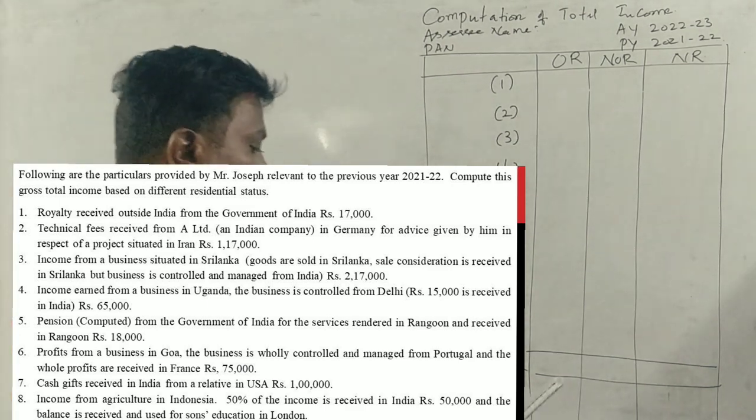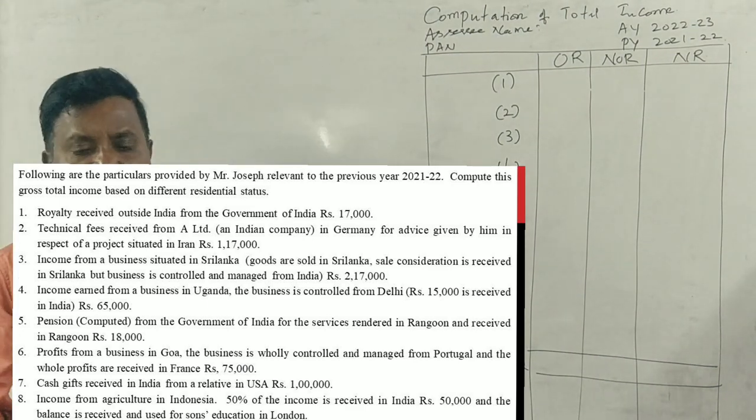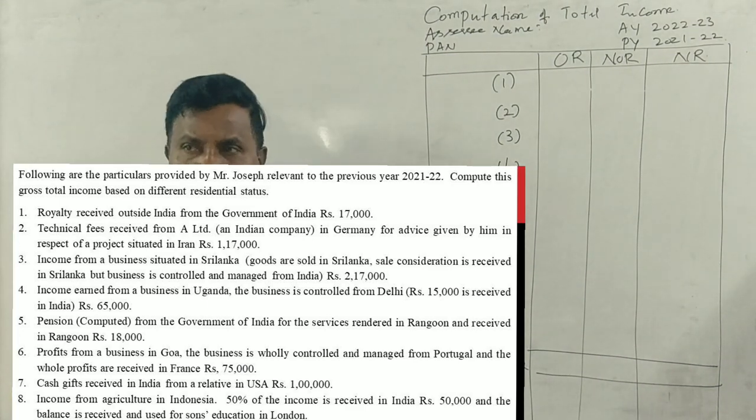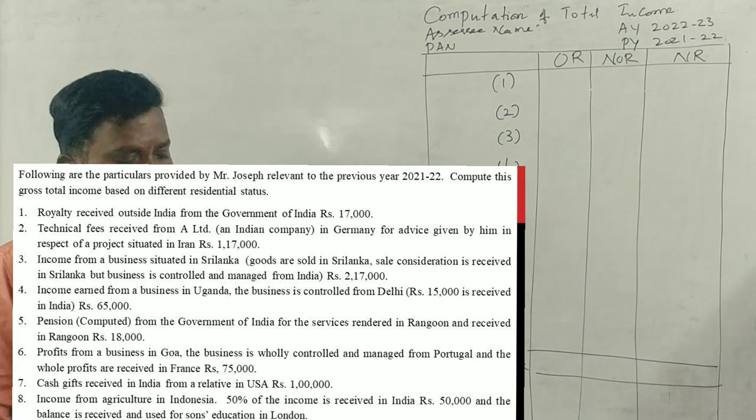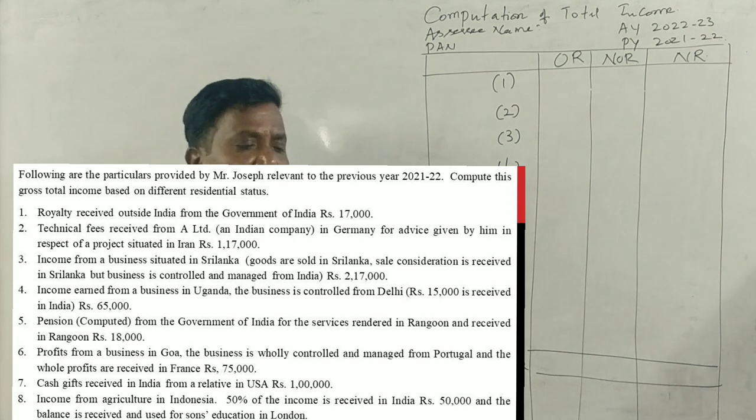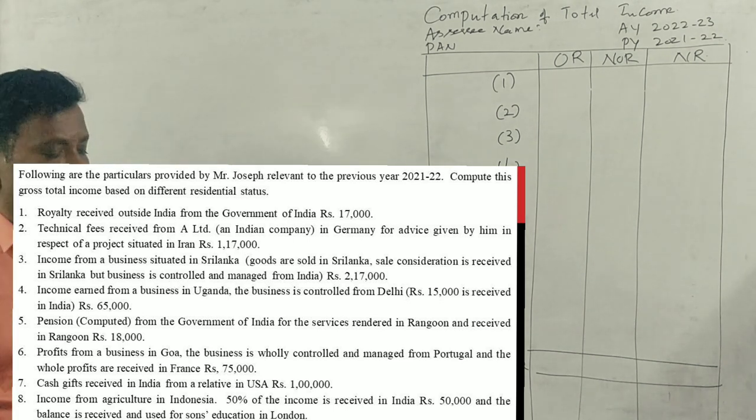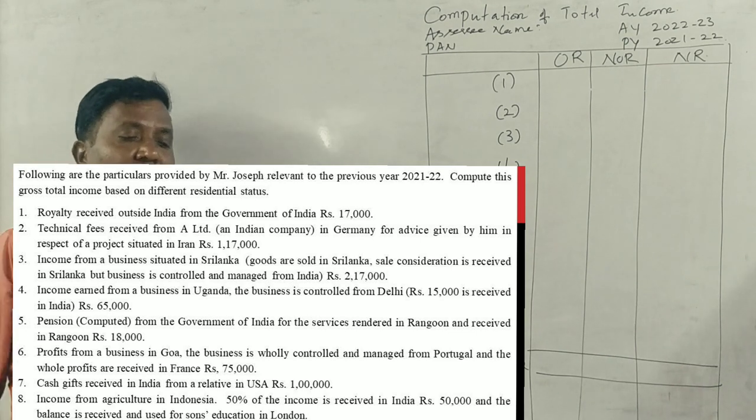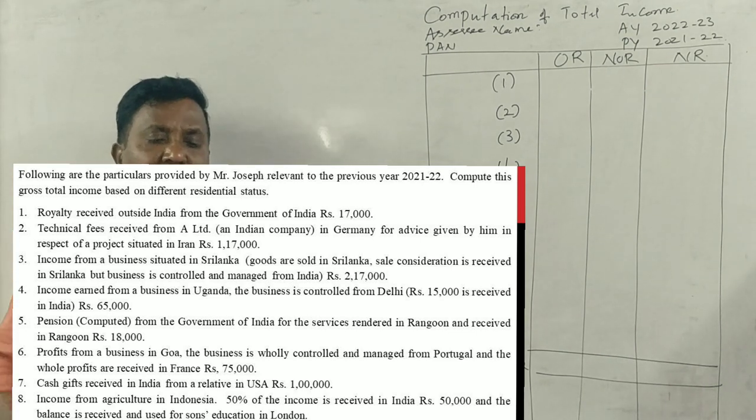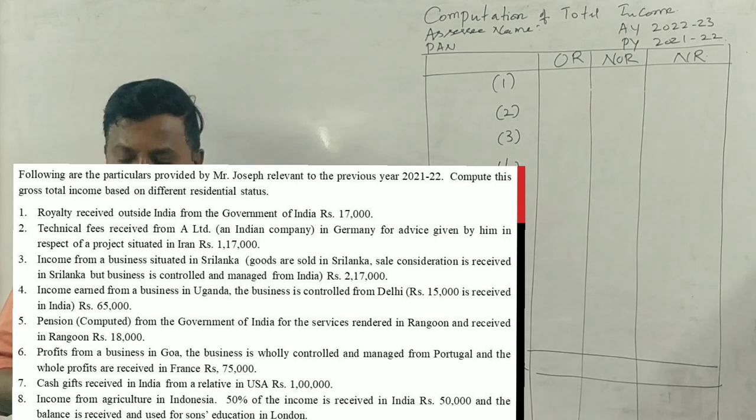Students, income tax won only. Incidence of tax rate is a problem. This is an examination question. Following are the particulars provided by Mr. Joseph relevant to the previous year 2021-22. Compute his gross total income based on different residential standards.